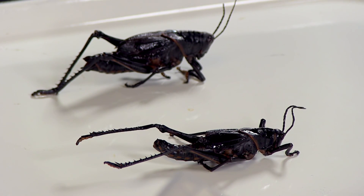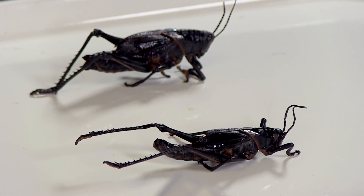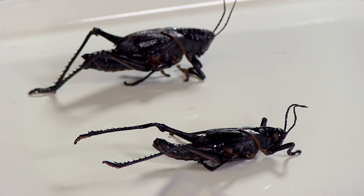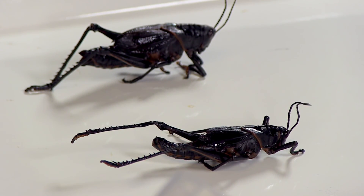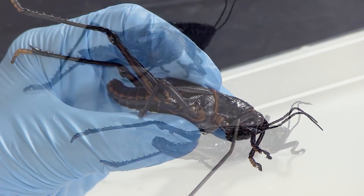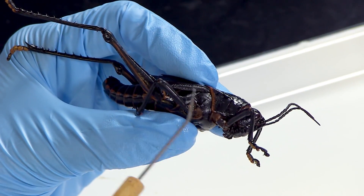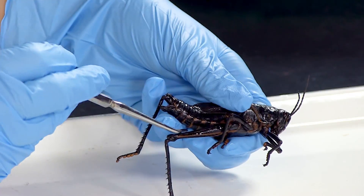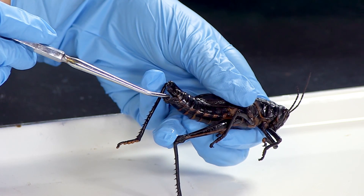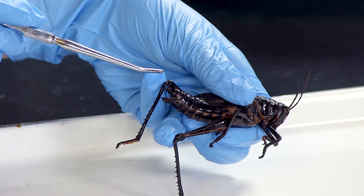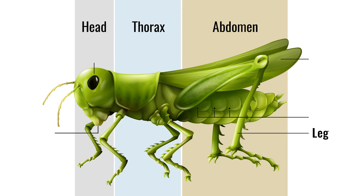Observe the external anatomy of your grasshopper as described in the arthropod learning unit that accompanies this lab. Locate the head, thorax, and abdomen. See if you can determine whether your specimen is a male or female. Then observe the legs, wings, spiracles, eyes, and mouth of your grasshopper.